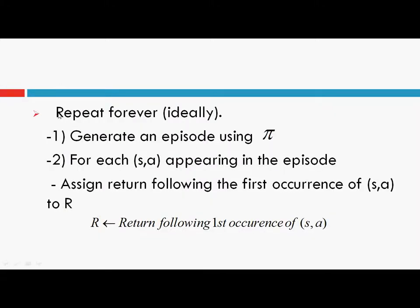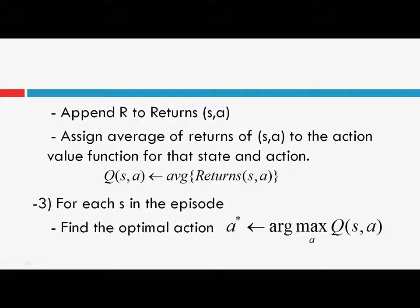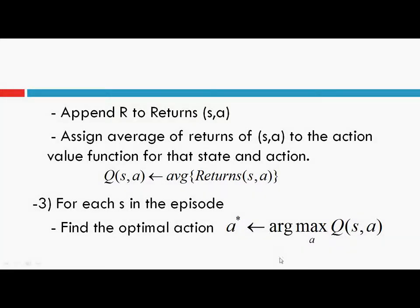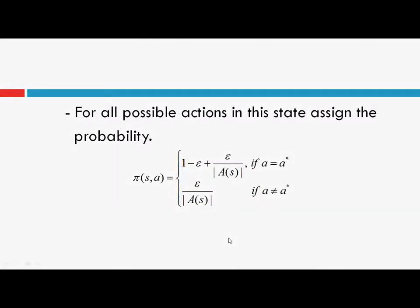The concept of GPI: we generate an episode, then perform an evaluation step and an improvement step. This improvement step is a bit different from the Monte Carlo ES algorithm because here we are following the epsilon-soft policy. The first step in this improvement is to find an optimal action — a-star is argmax over a of Q. For each state, we select an action that gives the maximum value of Q, and we denote this action as a-star.